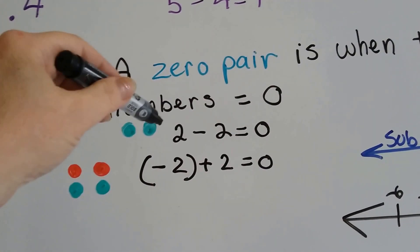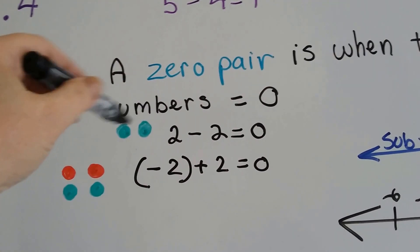If I have a positive two — so it'd be like two green positive chips — and I take away two positive green chips, I have zero green positive chips. If I have two negative red chips and I add two positive green chips, this one cancels this one out and this one cancels this one out. The negative cancels out the positive one and it brings me back to zero.